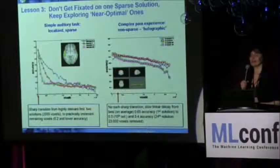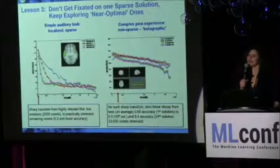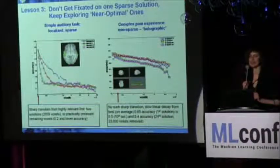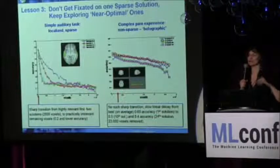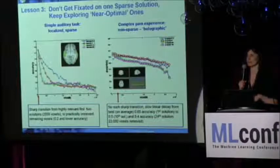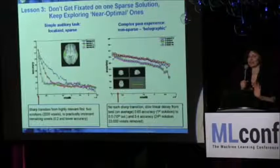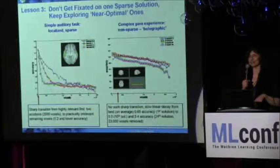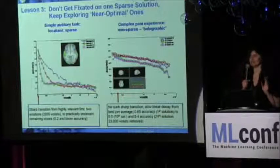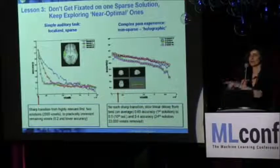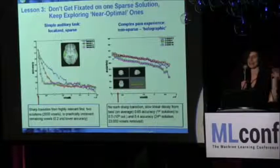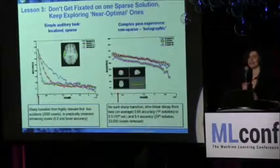One more lesson: even though you may love sparsity, you may discover interesting things. Some problems are indeed sparse — for example, in a simple auditory task from a video game, after you remove the first sparse solution and try to find another, after a few removals the rest of the brain seems irrelevant. It's a truly sparse, localized task. In other cases like pain, if you keep throwing away your sparse solutions, you still keep finding very good predictive solutions. The gradation of performance is very slow — essentially the brain is holographic, and the information about pain is everywhere. That's something you'll never see with standard univariate correlation methods.